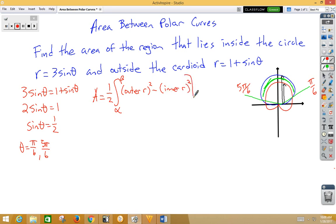So area is 1 half from pi over 6 to 5 pi over 6. We're going to have 3 sine theta squared minus 1 plus sine theta squared d theta.